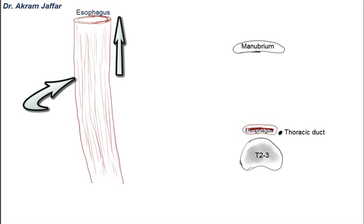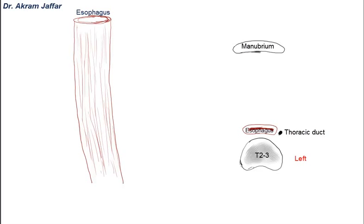It's important to mention that this transverse section is oriented to match CT and MRI sections. So the left side of the section is on the left, and the right side is on the right. Evidently, the thoracic duct in the superior mediastinum is located on the left side of the esophagus.